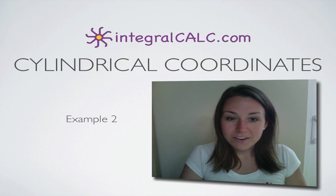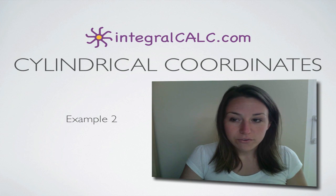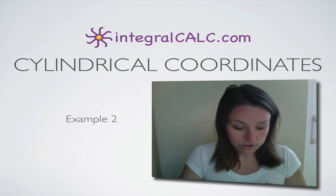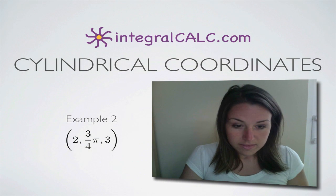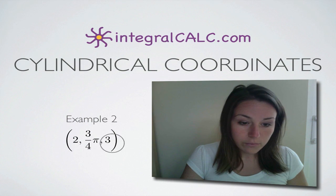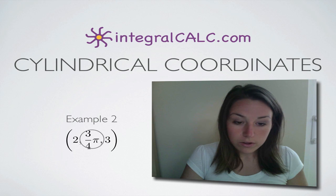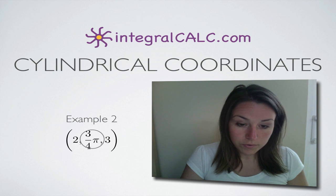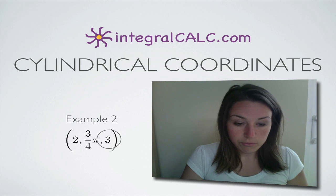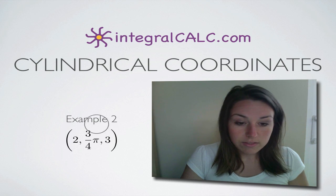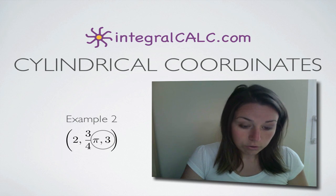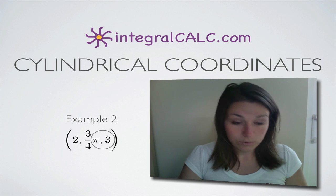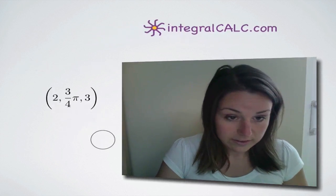Today we're going to be doing another example of converting cylindrical coordinates to rectangular coordinates. The example that we're working with is the coordinate 2, 3π over 4, and 3. These are cylindrical coordinates and we're going to change them into rectangular coordinates.